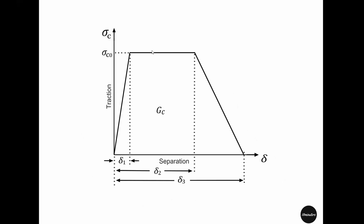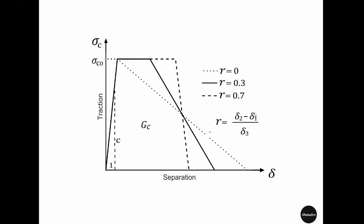There are several ways to describe a trapezoidal cohesive law. One way is to start with the slope, where the traction or stress increases according to that stiffness until the strength defined as sigma c naught. Once it reaches there, it will have a plateau region. This region is measured by the separation delta 2 minus delta 1. Finally, the traction decreases until it goes to 0, from separation delta 2 until separation delta 3. The fracture energy is given by the area under this trapezoid and defined as gc. We can combine delta 1, delta 2, and delta 3 into a single parameter R, which together with the fracture energy gc, the slope or stiffness c, and the strength sigma c naught can fully define this trapezoidal cohesive law.